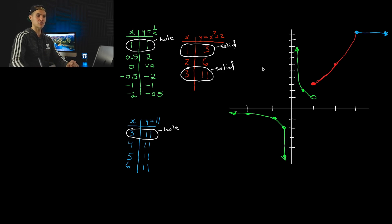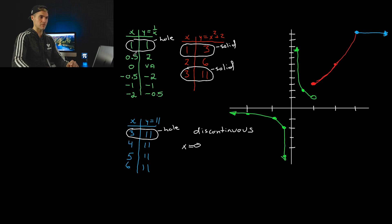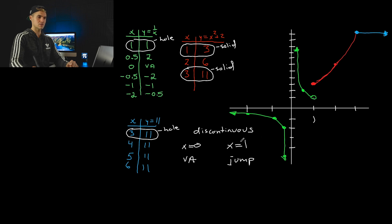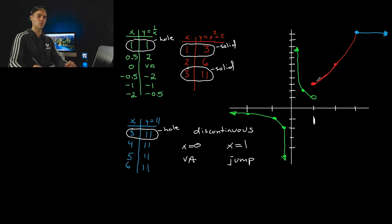Commenting on the continuity, reading left to right: the function is discontinuous at x equals 0 because of the vertical asymptote from 1 over x. It's also discontinuous at x equals 1 because there's a jump there — this is often called a jump discontinuity. After that, it's continuous for all x values greater than 1. So the only discontinuities are at x equals 0 and x equals 1.